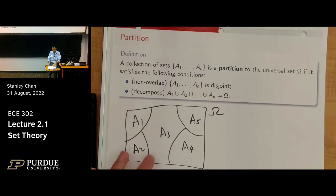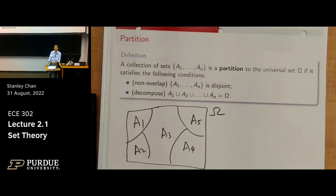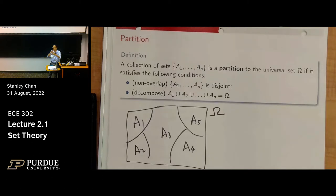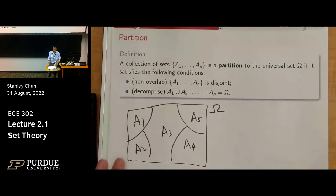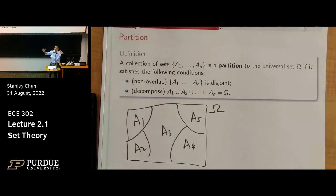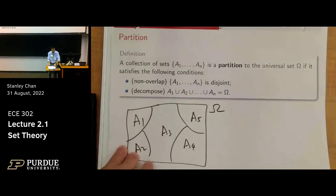There are many practical situations where you form a partition. For example, if you throw a die you naturally form a partition of six sets: one, two, three, four, five, six. If you look at a yes/no question you naturally form a two-part partition. You don't want them to overlap because if they overlap there are lots of things you cannot handle. We'll come back to this notion of partition later as we define the probability space.